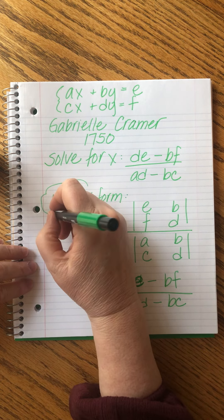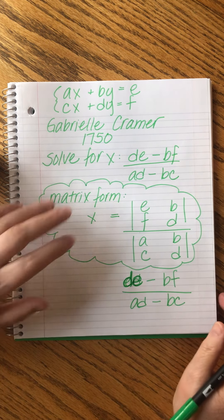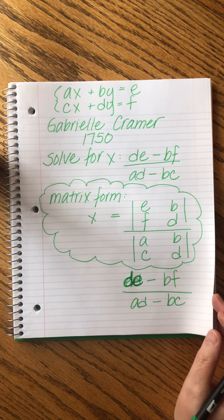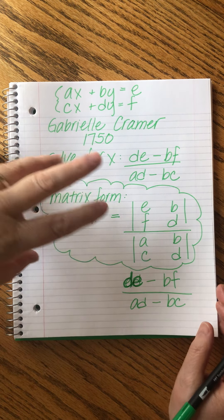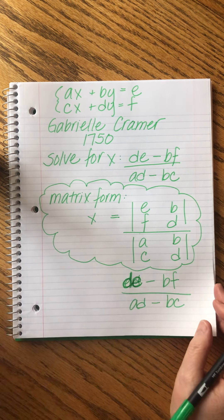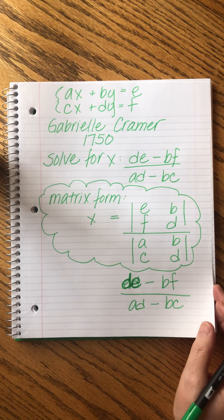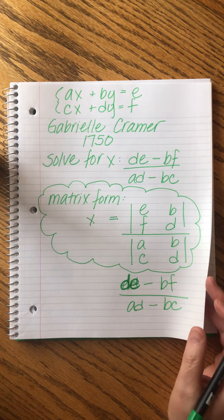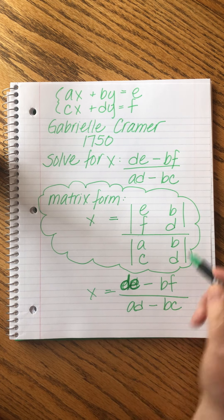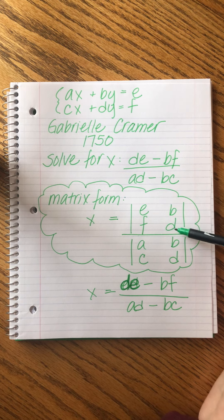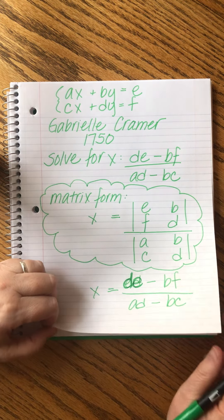So when we use this matrix form and take the step of solving the matrix, we get our formula back again. These two — the formula method and Cramer's Rule matrix method — are just two different ways of expressing the same idea. They're like fraternal twins: very, very close to being the same thing.